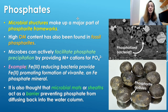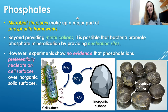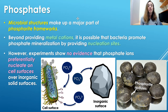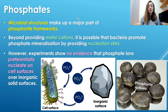Microbial mats and sheaths are also thought to act as a barrier preventing phosphate from diffusing back into the water column once it's released into pore waters, keeping it there to react with microbial surfaces and precipitate as microbially induced minerals. However, beyond providing metal cations, it's unclear whether bacteria actually promote phosphate mineralization by providing reactive surfaces as nucleation sites. Experiments have shown no evidence that phosphate preferentially nucleates on cell surfaces over other inorganic surfaces, so this remains unclear.